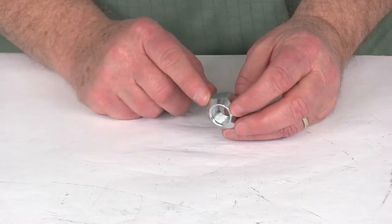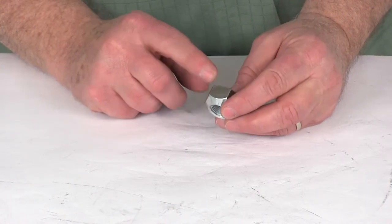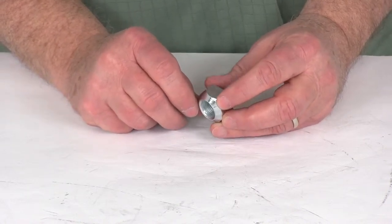This lug nut is designed to fit 5 eighths inch diameter wheel studs. It uses right hand normal thread, it's 18 threads per inch.